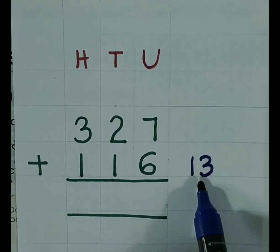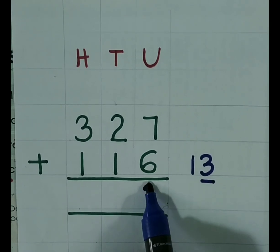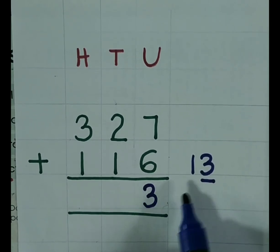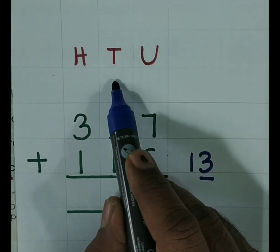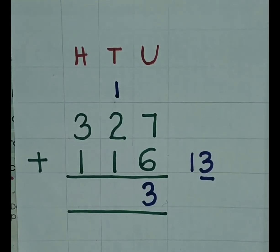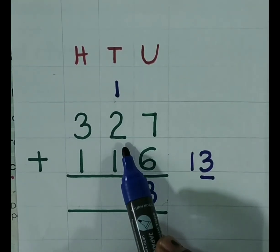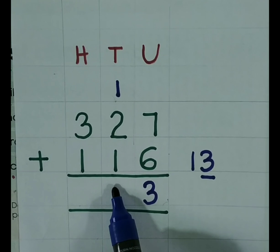13 units are there. So, we have to write 3 units in the unit place. 1, 10th carry at the 10th place. 1 plus 2, 3. 3 plus 1, 4.